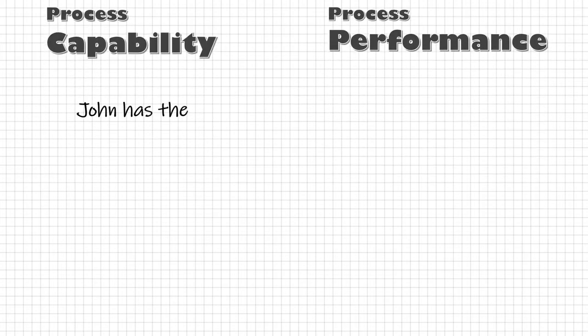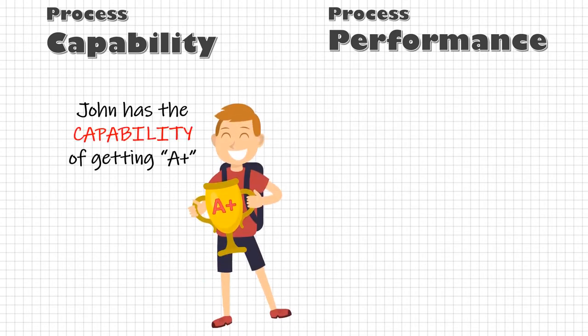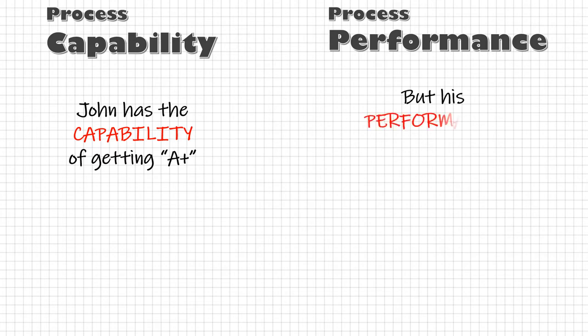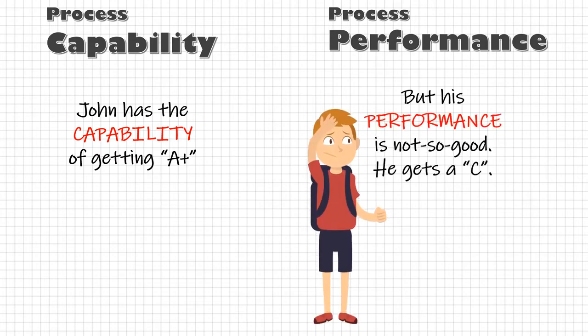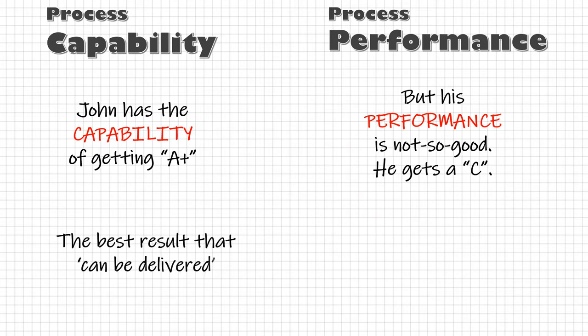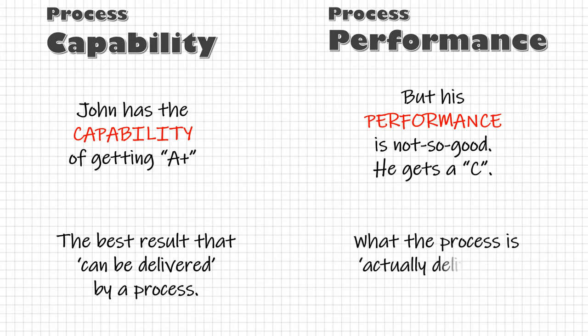Little John has the capability of getting A plus in mathematics, but as his performance is not good enough, he gets a C. Capability represents the best result that a process can deliver. Process performance, on the other hand, is what the process is actually delivering irrespective of all the variations.